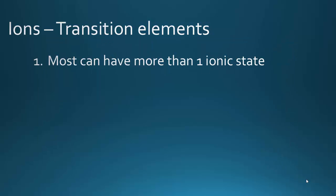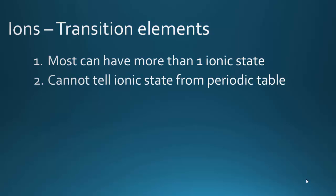It turns out that most of the transition elements, or the transition metals, can have more than one ionic state. Why? You just have to trust me on this one, but feel free to ask me in class. You cannot tell the ionic state from its position on the periodic table, unlike the representative elements.